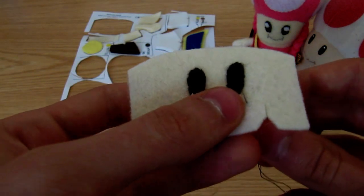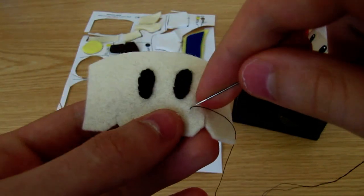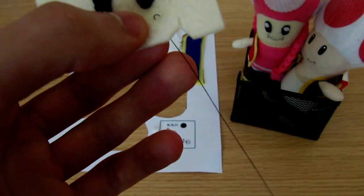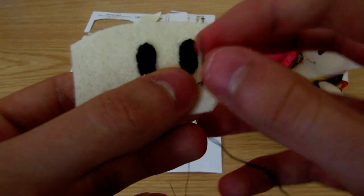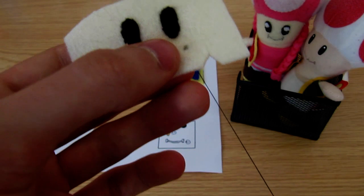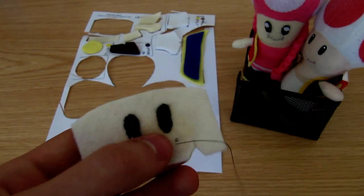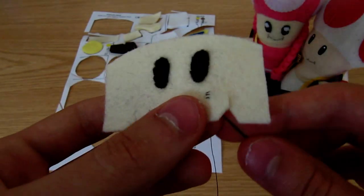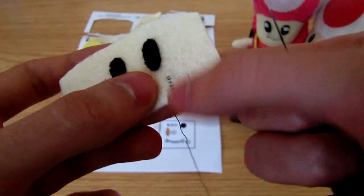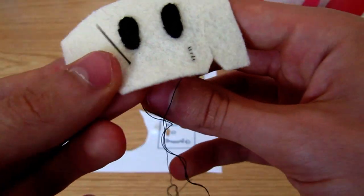Now we'll embroider the mouth. Start at a position directly below the outside of the eyes, and do a few horizontal stitches like this. You could also use thicker thread if you have any, such as embroidery thread. Do it on both sides of the mouth.